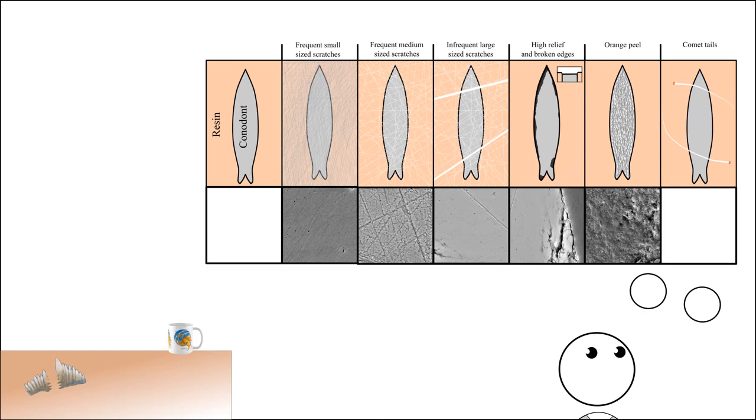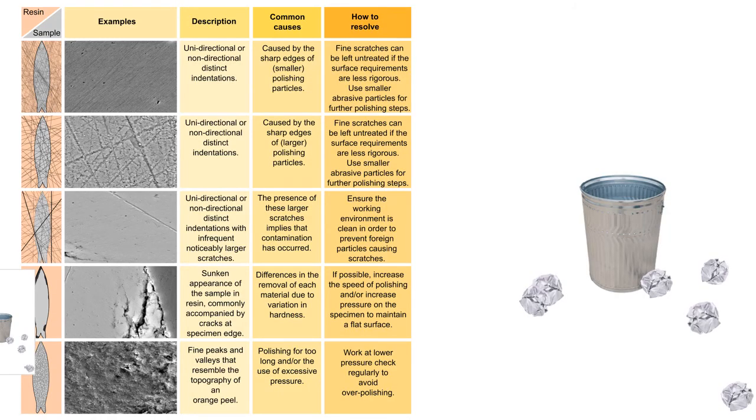The next is comet trails and luckily I don't have a photo of this but comet trails are where contamination embedded in your resin becomes loose from the grinding stage and moves across your sample and scratches it. This is just a summary of everything that I had said of all of the missed shots when we're trying to get the ball into the trash can.